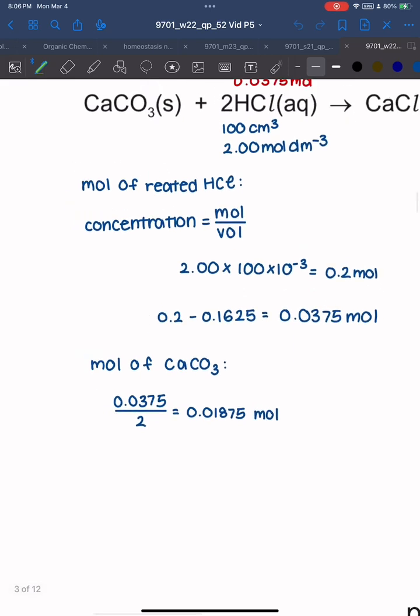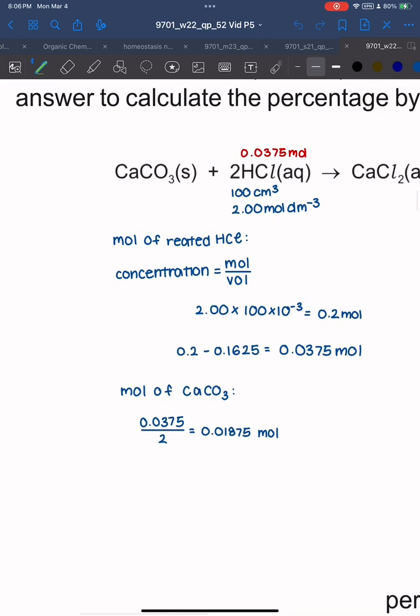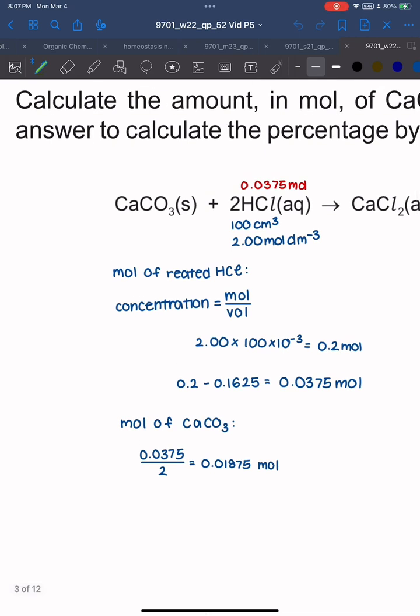You can get moles of CaCO3 using the ratio. In the equation, the coefficient of HCl is 2 and CaCO3 is 1, so divide by 2 to get 0.01875 moles of CaCO3.